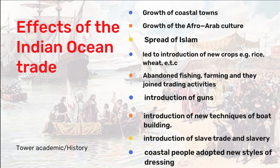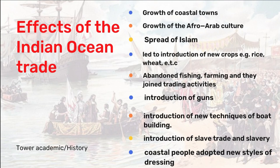Eighth, the Indian Ocean trade introduced the slave trade and slavery, driven by Arab demand for slaves. Lastly, coastal people adopted new styles of dressing — influenced by Arab and Muslim fashion, including veils and silk garments brought in by traders from Arabia — fundamentally changing the cultural appearance of East African coastal communities.